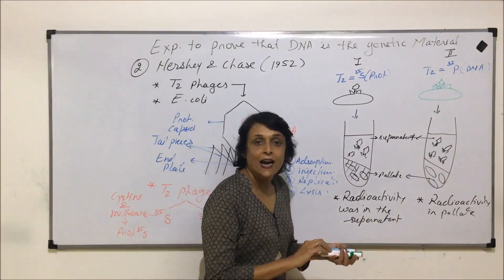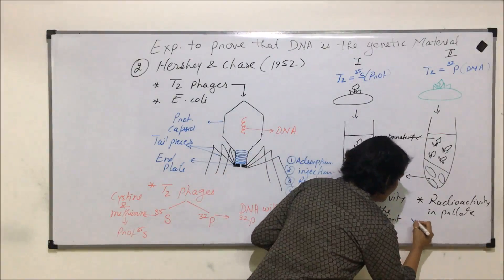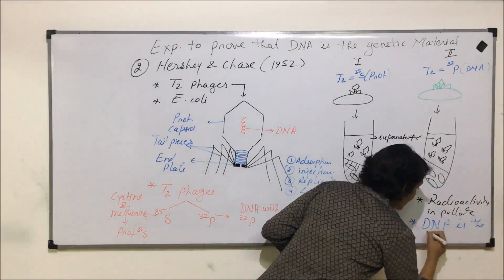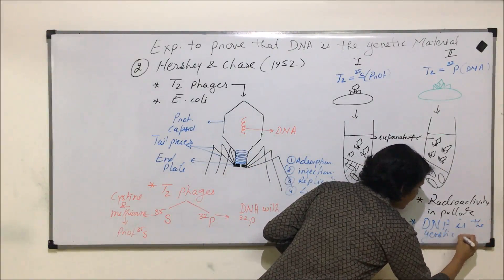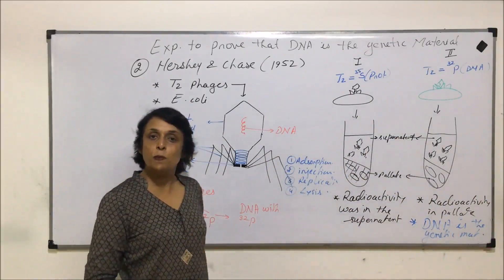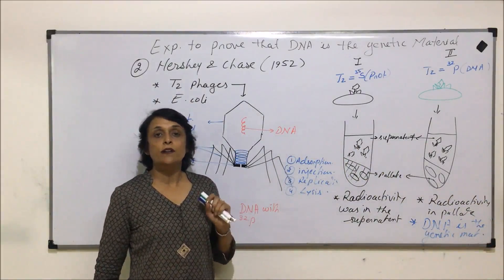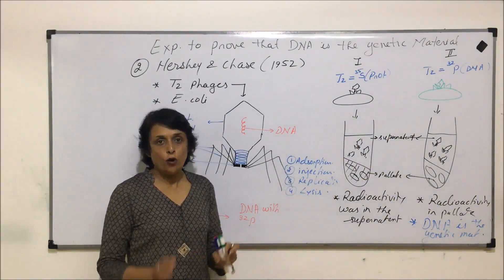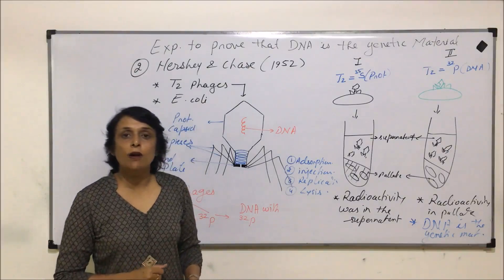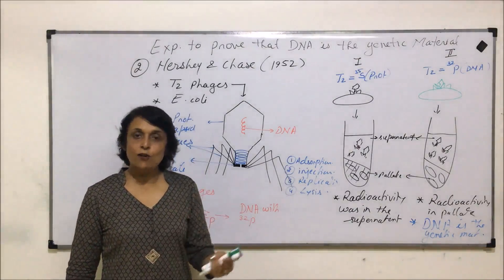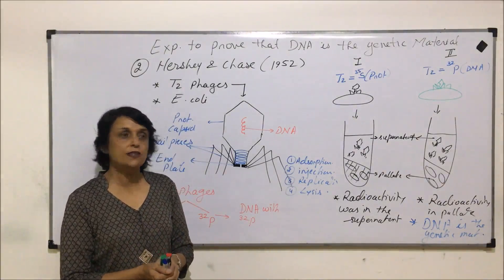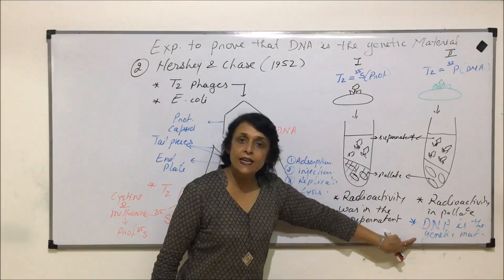That again gives us the conclusion that DNA is the genetic material. This is a confirmatory experiment. What Griffith told us was the initial part; Avery, Macleod, and McCarthy added on to Griffith's experiments and almost reached the conclusion that DNA is the genetic material.